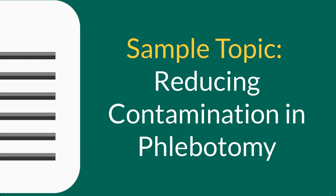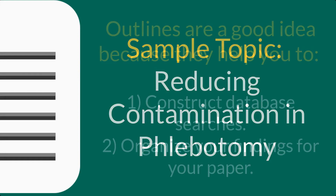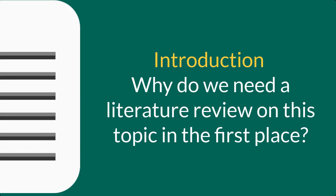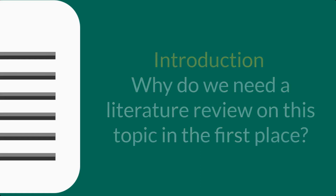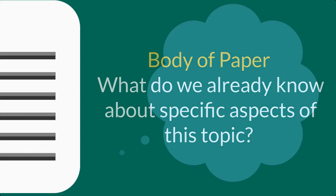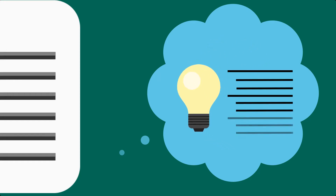So let's say you're writing a literature review on reducing contamination in phlebotomy. First, we're going to start off with a preliminary outline for two reasons: it's going to give structure to your search, and it's going to give you a place to take notes and make connections between resources as you read. Your introduction is where you make your case for why we need a literature review on this topic. The bulk of your paper will answer the question, "What do we know about this topic?" addressing specific aspects of each area of knowledge. When you begin, it's fine to take an educated guess about what each of these areas might be — you can and should revise your outline as you go.